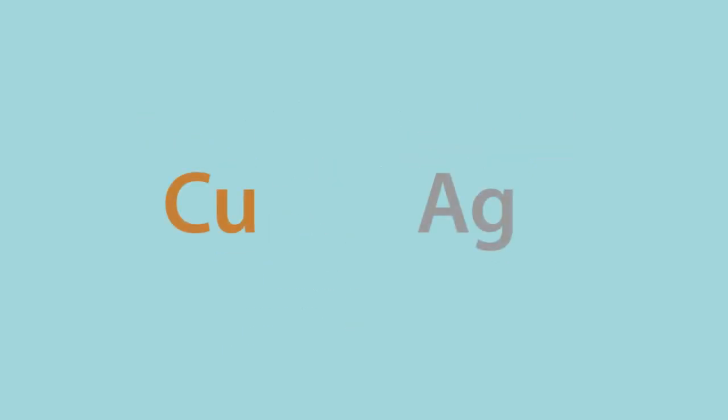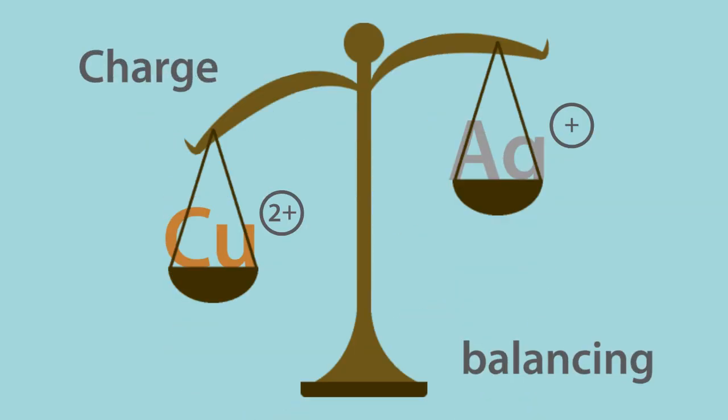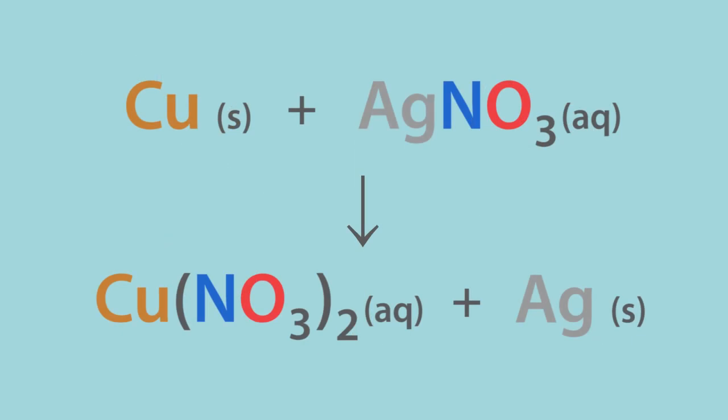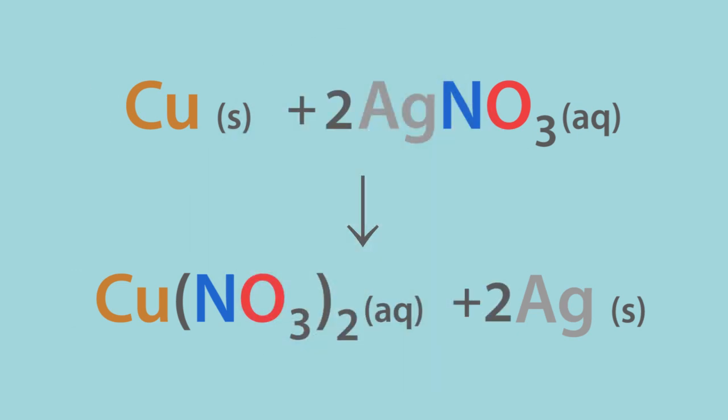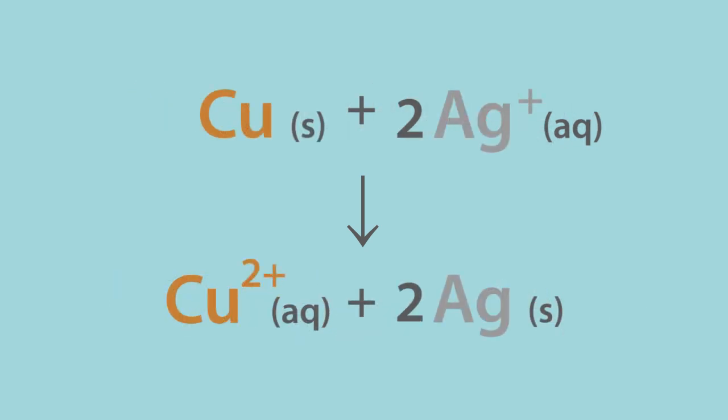When the metals carry different charges, they may need balancing. Can you balance a reaction between copper metal and silver nitrate solution? Pause the video for a moment whilst you think. You will need two silver nitrate species for every copper species. Because copper is most stable in the plus 2 oxidation state, we can also write this omitting the spectator ion, NO3-. Remember to balance the charge as well as the elements on either side of the equation.